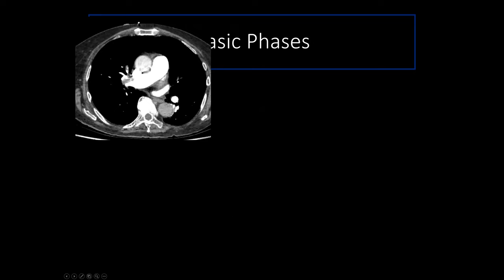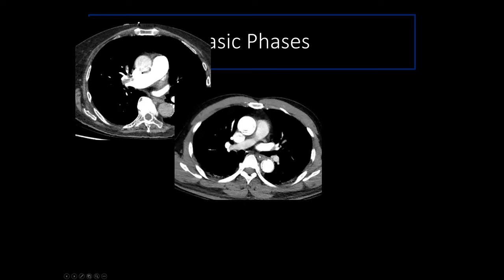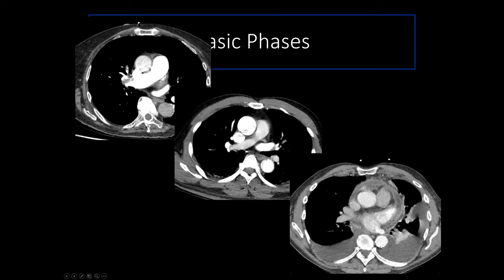Pulling up images: at 15 seconds post-injection, contrast is in the pulmonary artery — this is a CTPA. You'll pick up PEs very nicely as dark filling defects. In the middle image, the pulmonary artery is less dense but the aorta is very bright — this is a CTA. On the bottom right is a routine contrast-enhanced study where the arteries aren't super bright but you can see enhancement of structures like the pericardium. Now you understand why each phase looks the way it does.